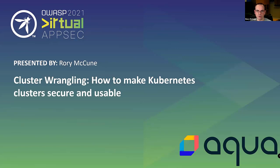Kubernetes and containers have been a growing trend in the marketplace over the last four or five years. As more organizations start deploying large numbers of applications to Kubernetes clusters, we're starting to learn a bit about what can go wrong and what can go right. What are the patterns that work to make secure environments with Kubernetes? And what are some of the mistakes being made?